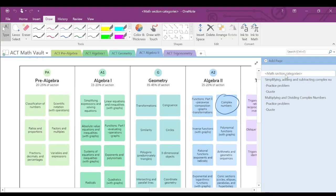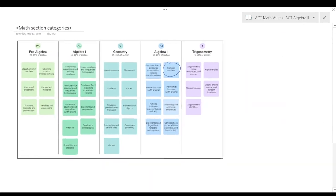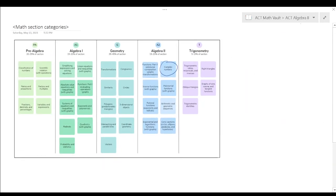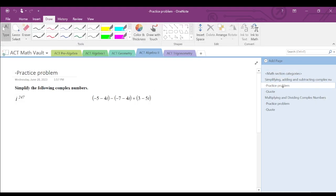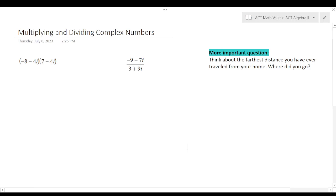Alright, so on the ACT section, Algebra 2, under Algebra 2, we have complex numbers. In Algebra 2, you typically learn about i, or the square root of negative 1 for the first time, and so we are working on multiplying and dividing here.